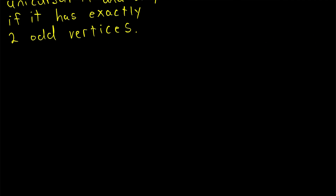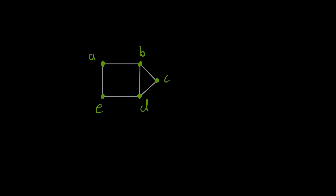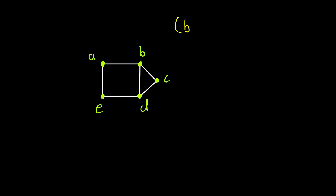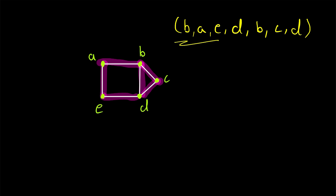Let's see another example on a graph that's a little more interesting. Here's an example of another unicursal graph. If we take a quick look at the degrees of these vertices, we see degrees of 2, 3, 2, 3, and 2. Thus this graph will be unicursal because exactly two of its vertices have an odd degree. An example of a unicursal line in this graph starts at B, then goes to A, then goes to E, then goes to D, then goes to B, then to C, and then from C it goes to D. That is an open trail in the graph that contains every edge, and notice how it starts and ends at the two odd vertices of the graph.